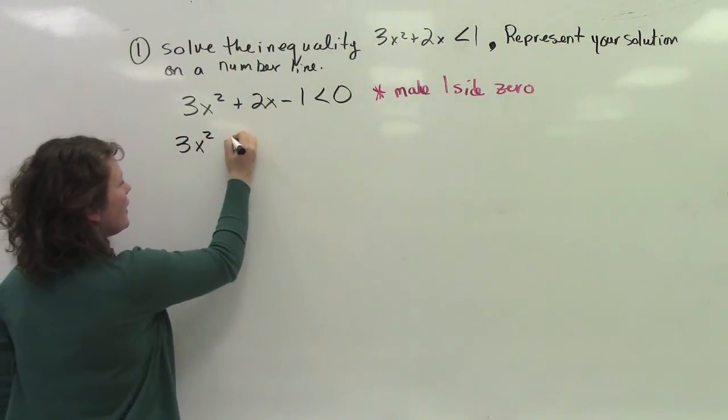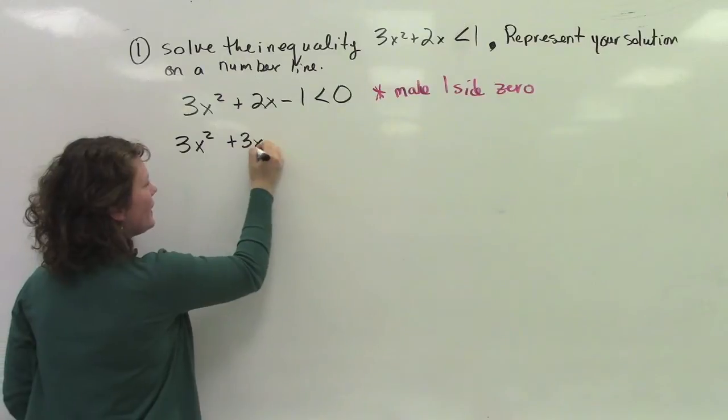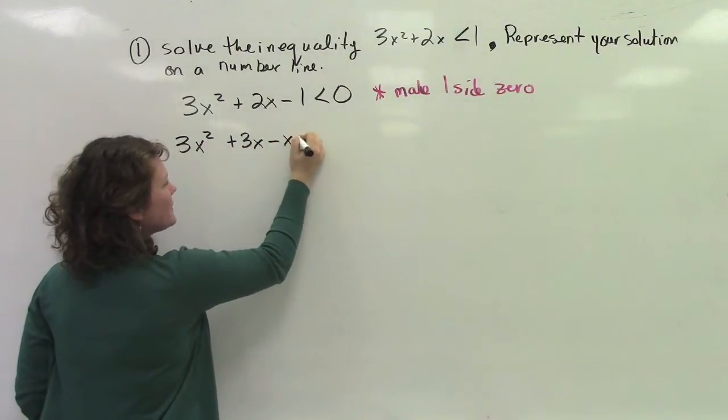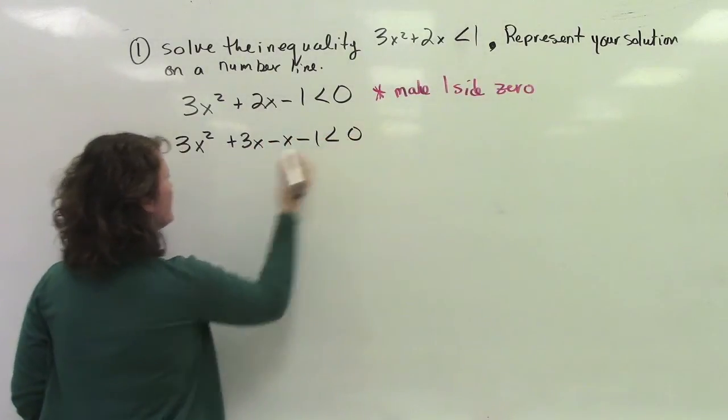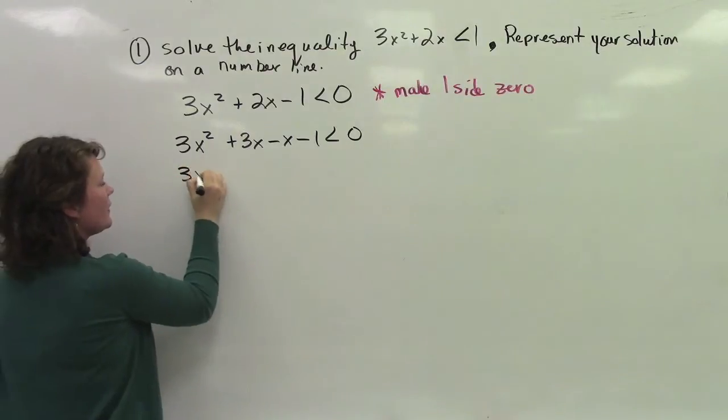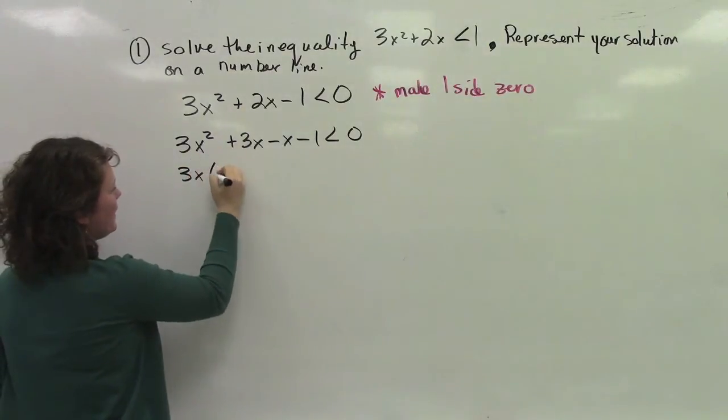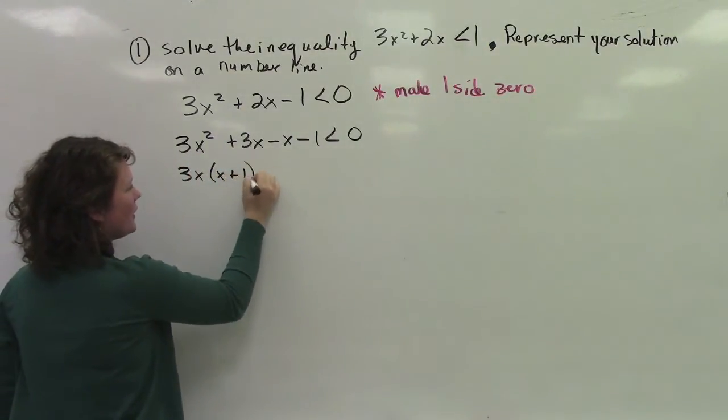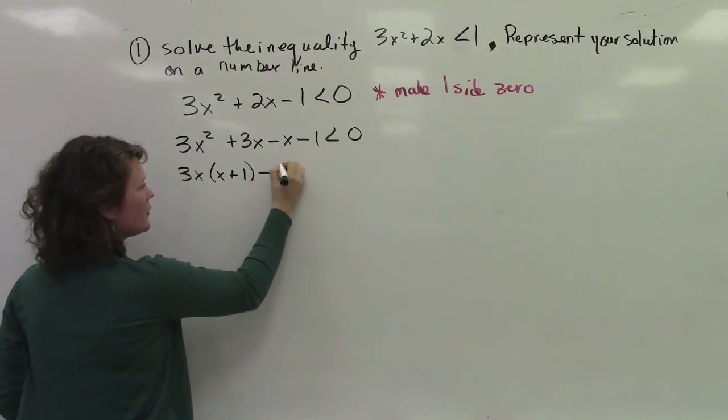3x squared plus 3x minus x minus 1 is less than 0. I'm going to say 3x, and I'm going to say x plus 1. I'm going to pull out a negative from both of those.